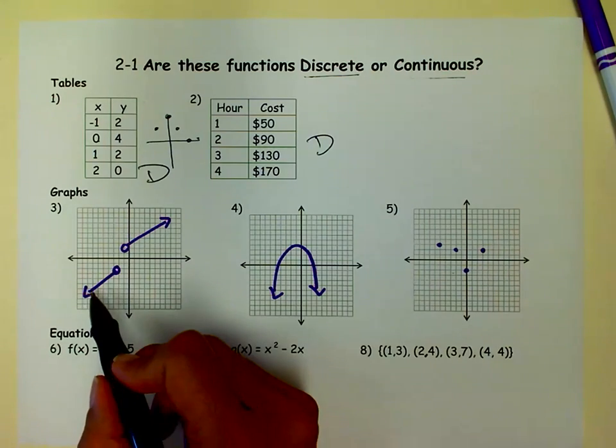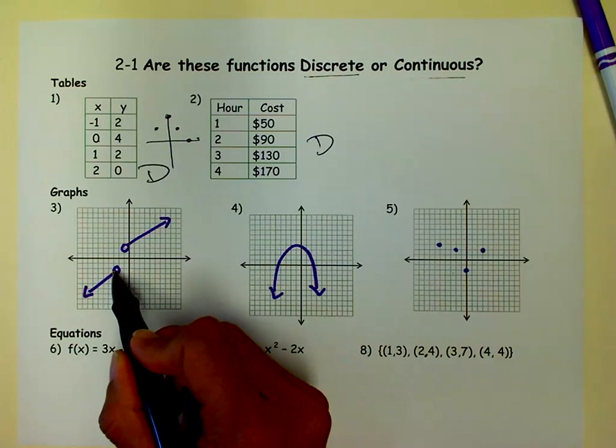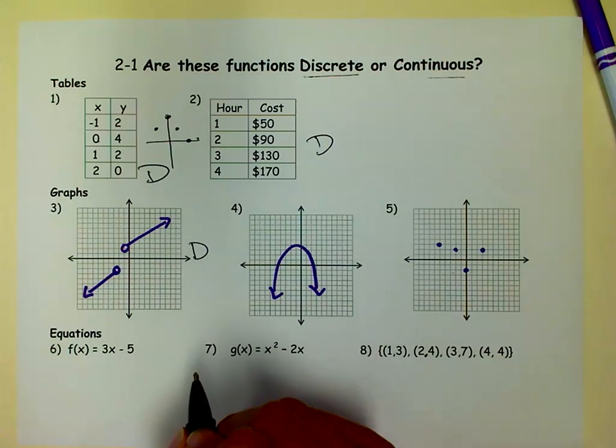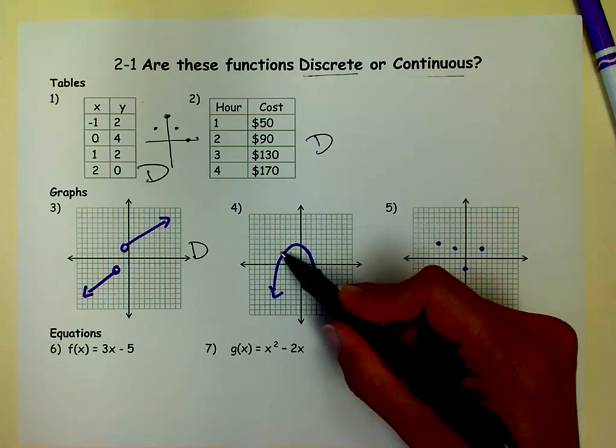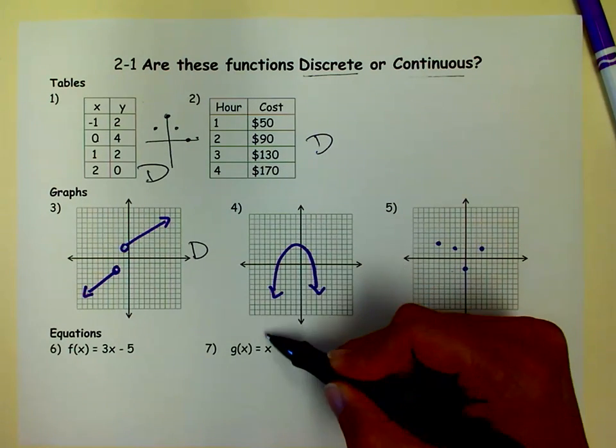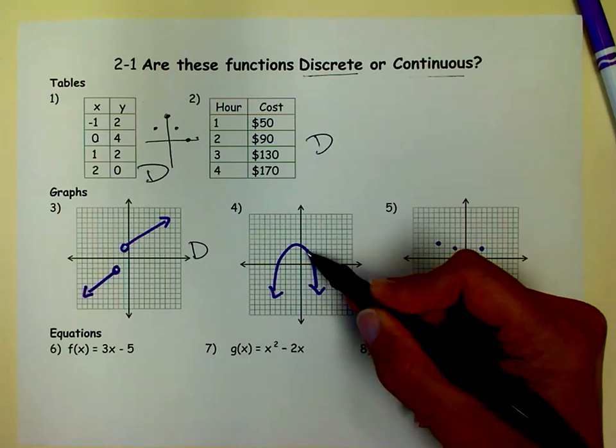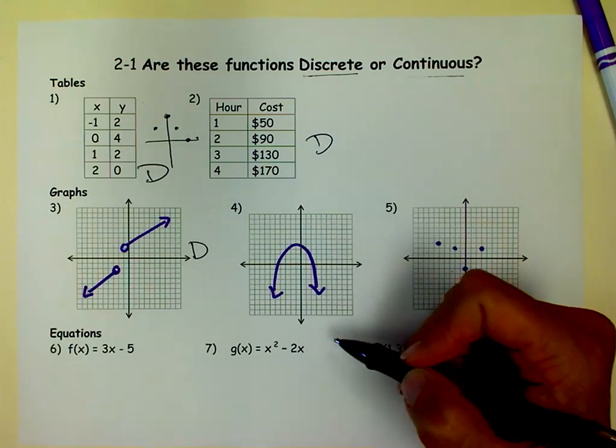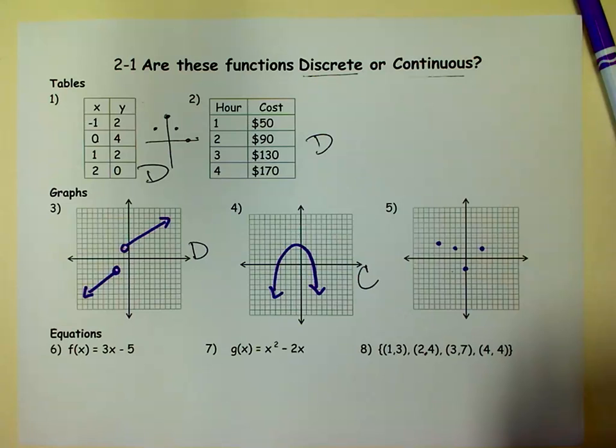It's easy to tell on the graph, because to get from this part, I have to jump up to that part. That's discrete. Whereas in this one, it's continuous. No matter where I am, I can just go from any place on the graph to any other place on the graph, and I never lift up my pen. So that one is continuous.